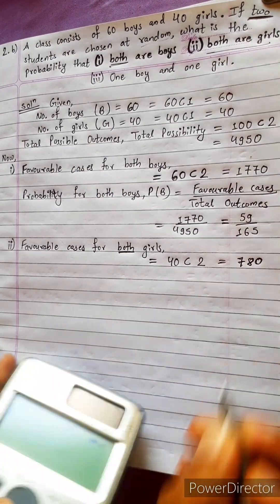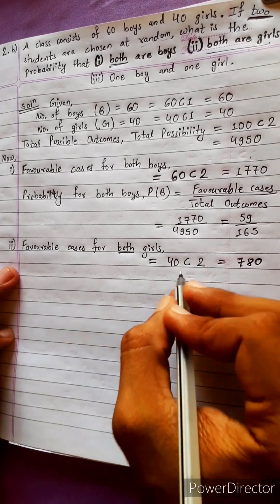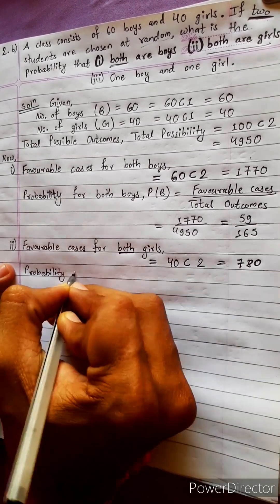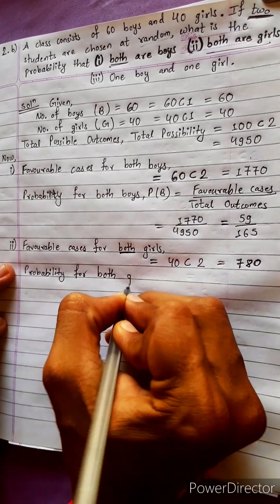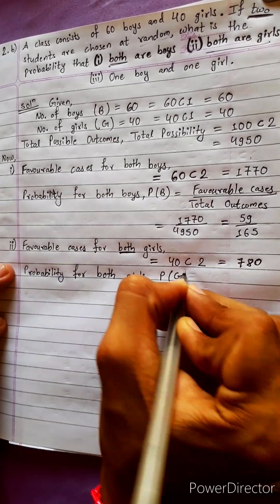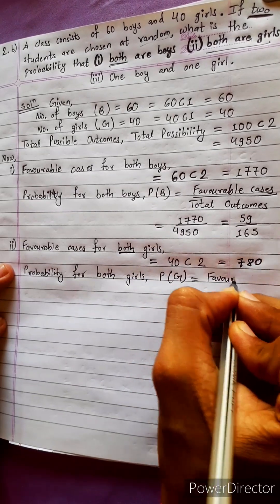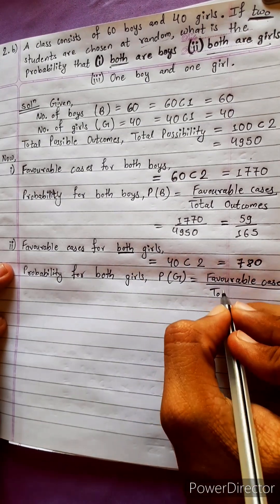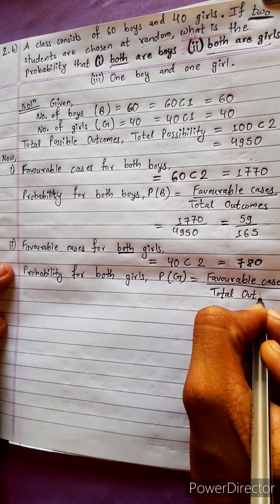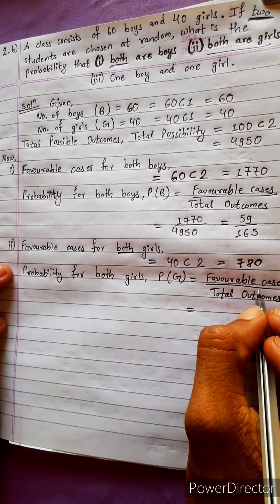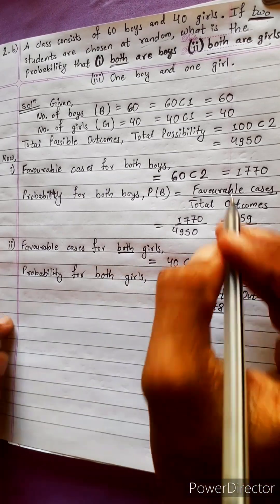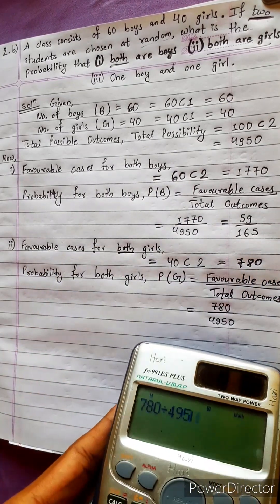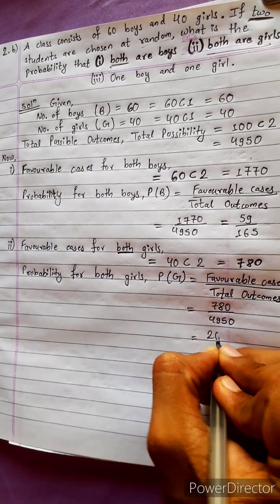We have to verify using the combination method. Now probability for both girls: P(G) equals favorable cases upon total outcomes, which is 780 upon 4950, giving 26 by 165.